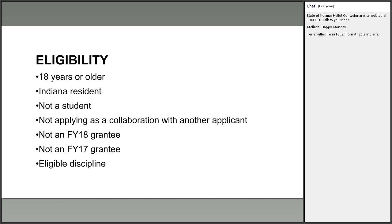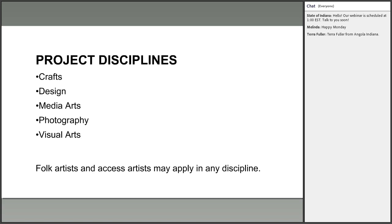You should not propose a project in collaboration with another applicant who is also applying in this cycle — they need to be different projects. You may not be an FY18 or FY17 grantee, though if you applied in either of those years but did not receive a grant, you are eligible to apply in FY19. Your project must also fall within one of this cycle's eligible disciplines: crafts, design, media arts, photography, and visual arts.